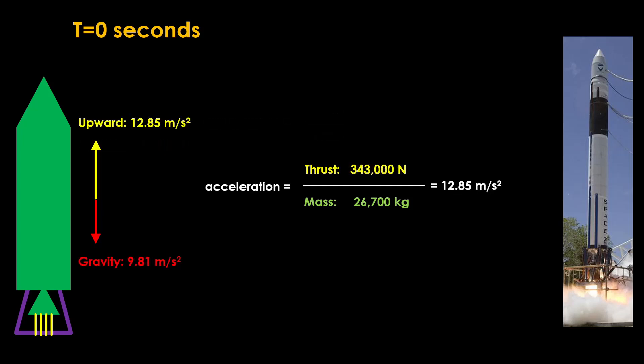Luckily, the Merlin 1A engine produces 343 kilonewtons of thrust, giving an acceleration of 12.83 meters per second squared. That's more than 9.81, so the rocket will move. We can figure out the acceleration by subtracting the gravity from the upward acceleration and we get 3.03 meters per second squared. That is the amount the rocket actually accelerates. The rest of the acceleration from that engine is lost to gravity. That is what a gravity loss is.